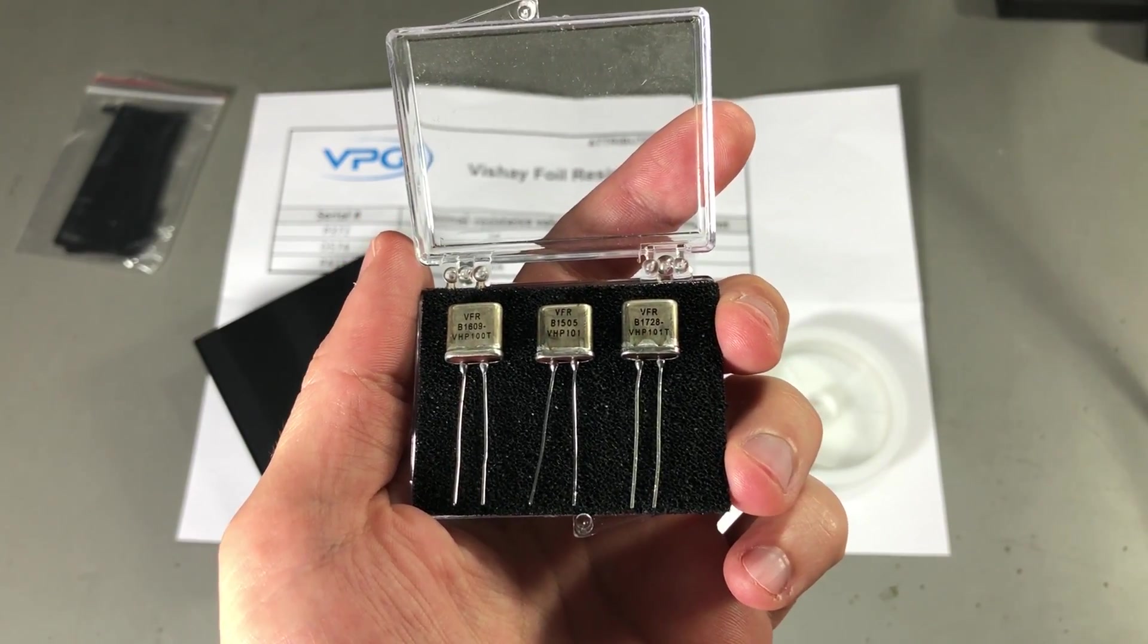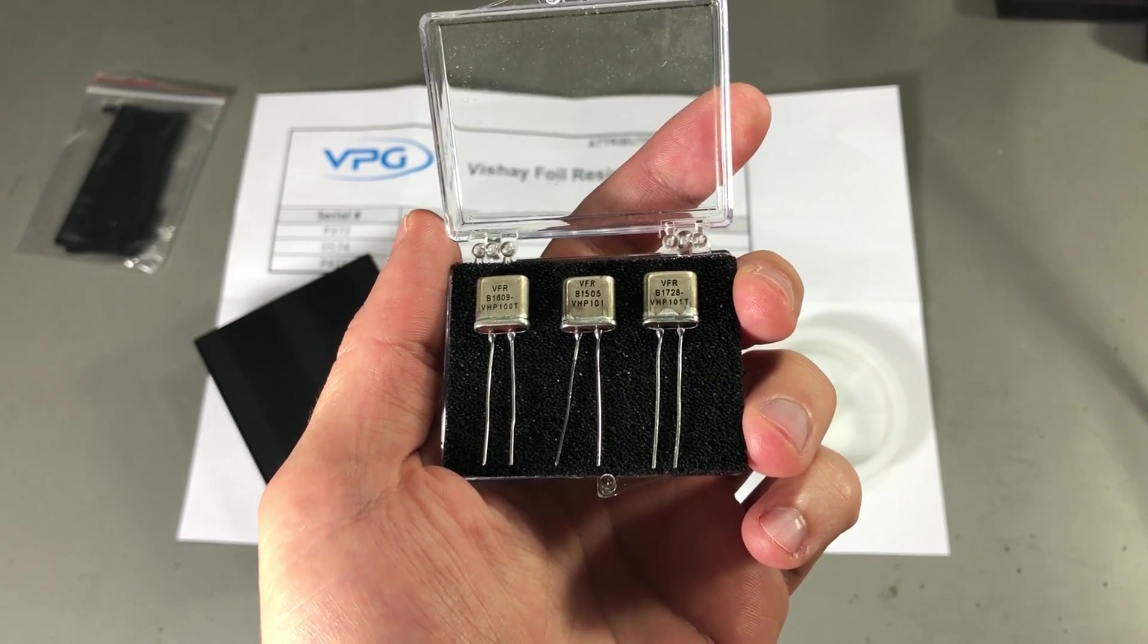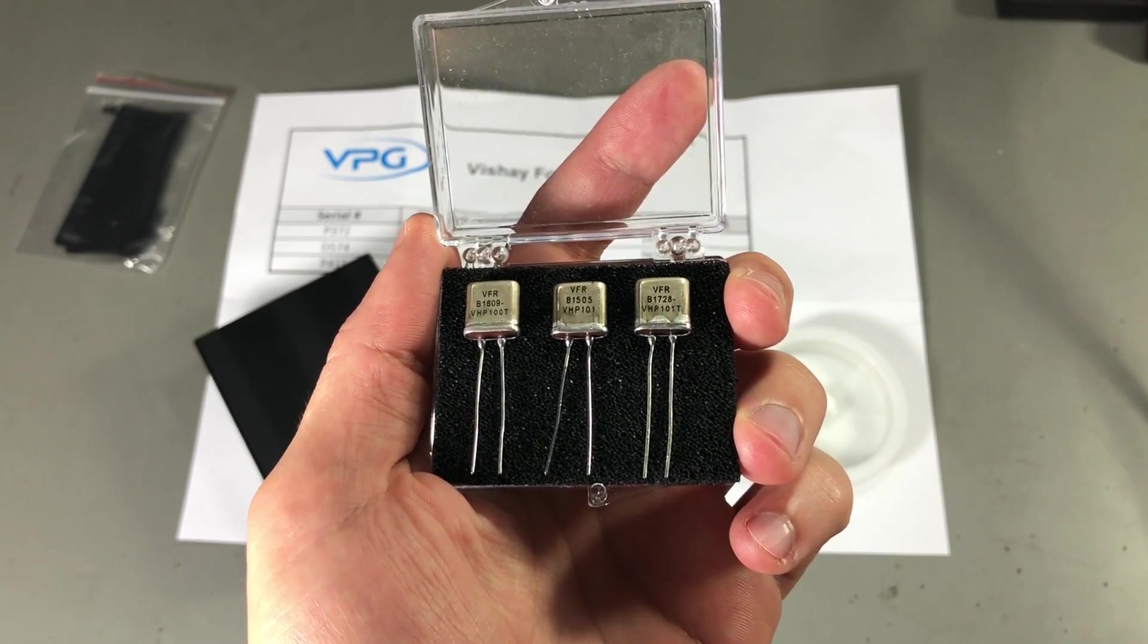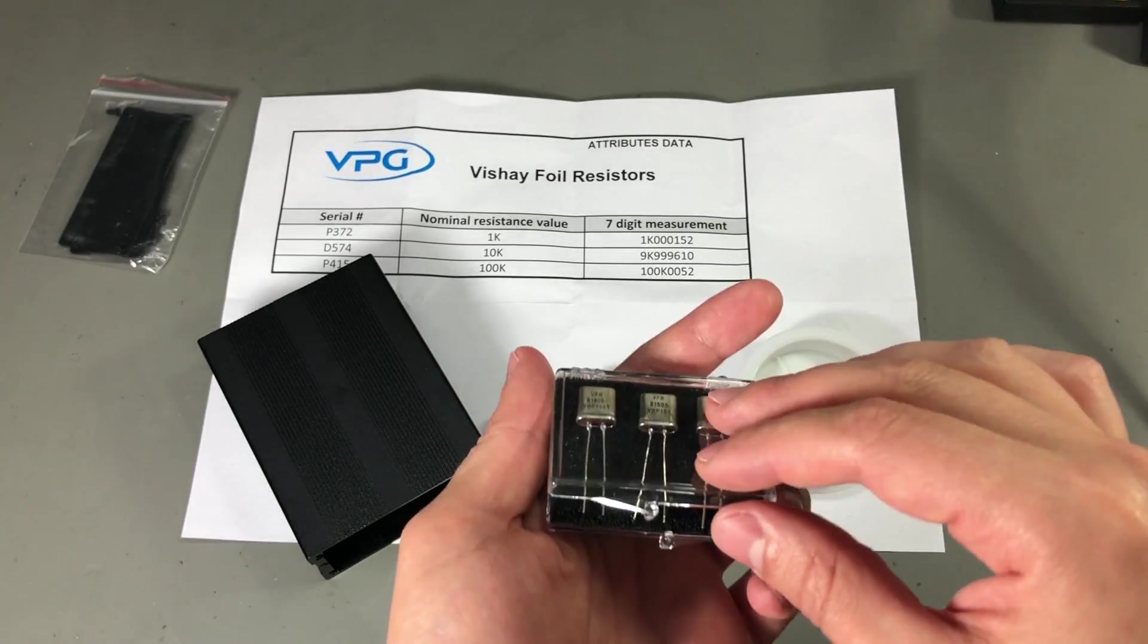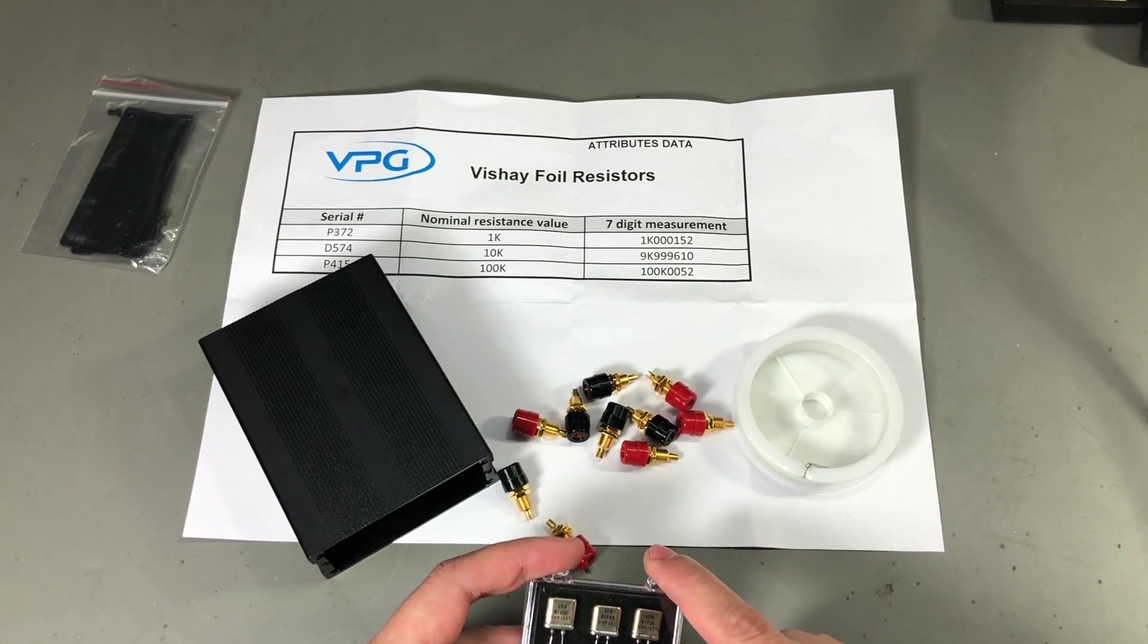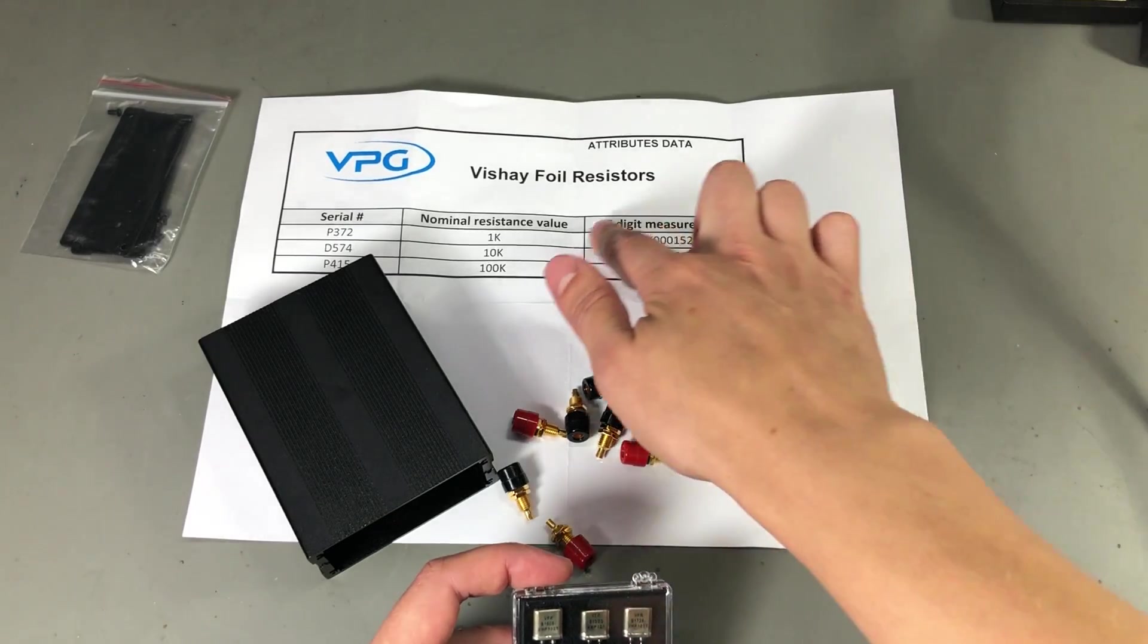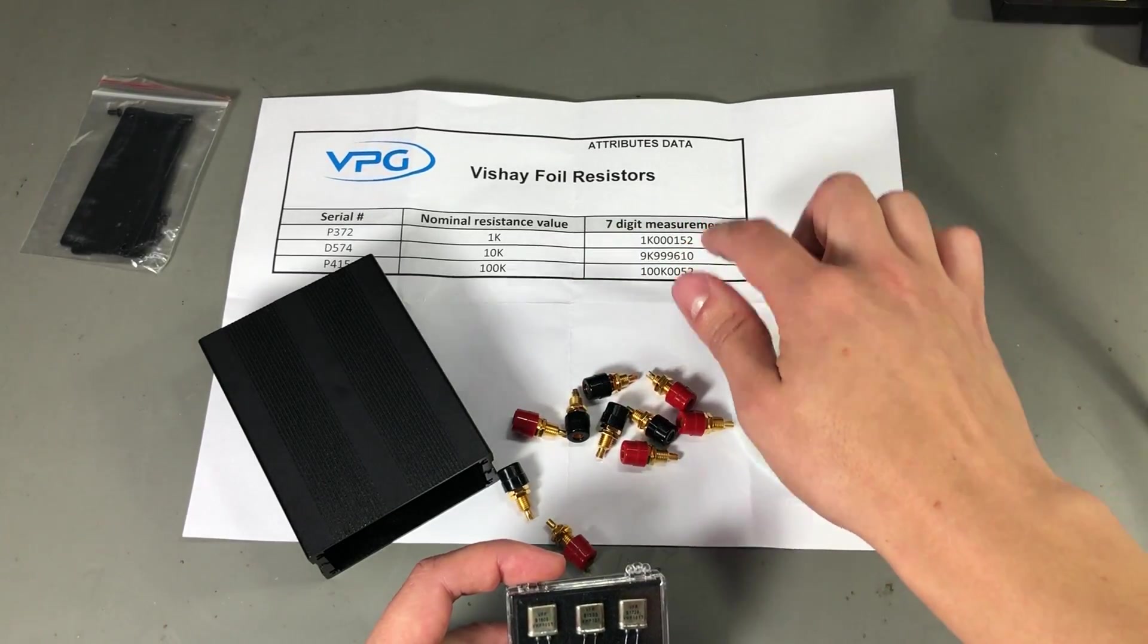Purchasing these in some standard values carried at the big distributors will cost you around $70 a piece. Now Vishay have been kind enough to measure these on their laboratory grade 7 digit multimeter at their facility. They sent me this measurement sheet.